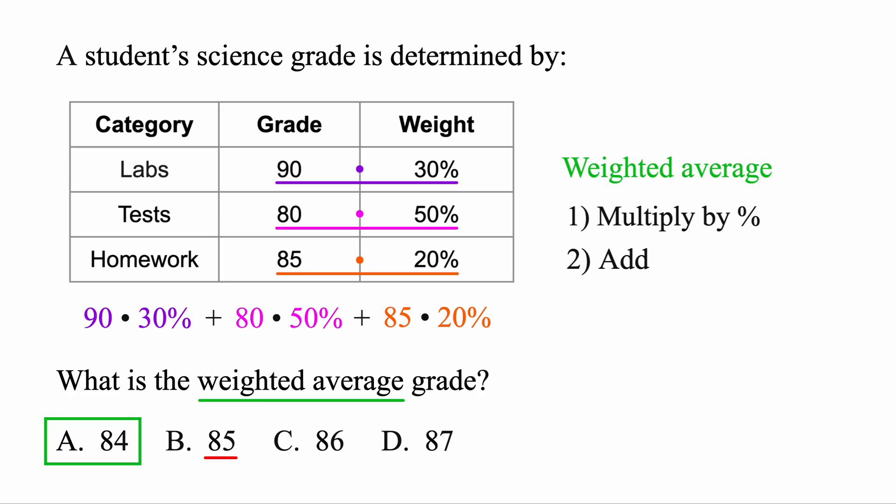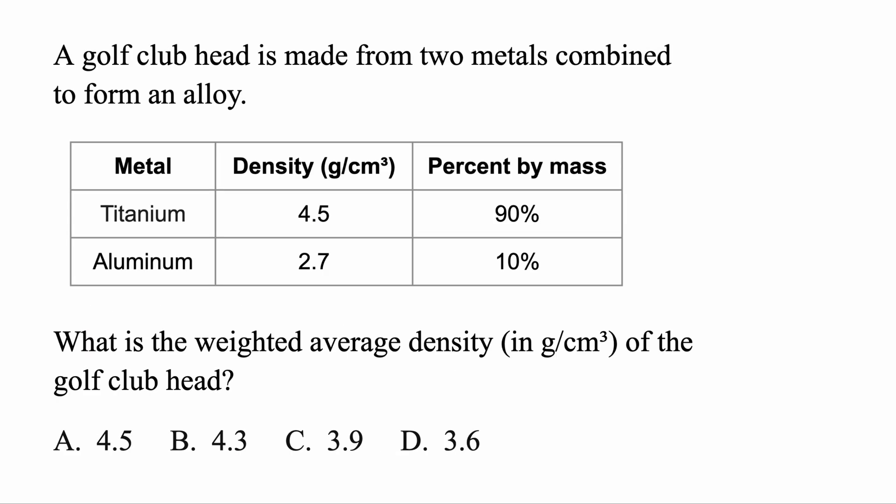Okay, but when would you use these? Let's look at an example. Once again, we're finding a weighted average. Let's go ahead and read it. A golf club head is made from two metals combined to form an alloy. We've got titanium and aluminum. They have these different densities, and they show up with these percents. What is the weighted average density of the golf club head? We'll define the weighted average. Let's go ahead and copy down our first step. We know we want to multiply by its percent, and we're interested in the density.